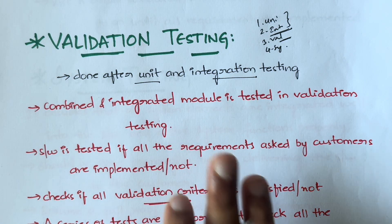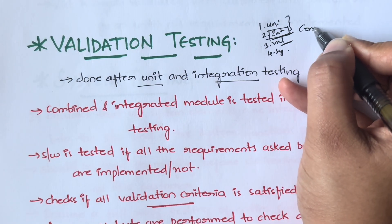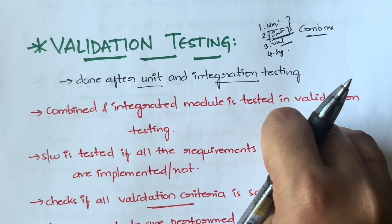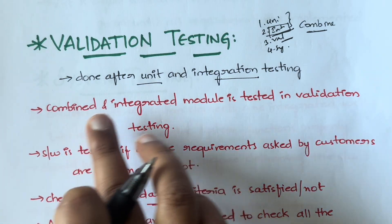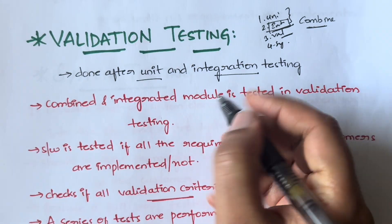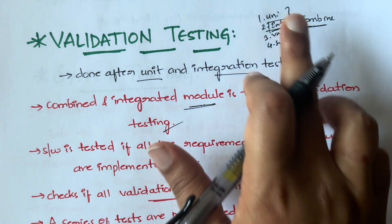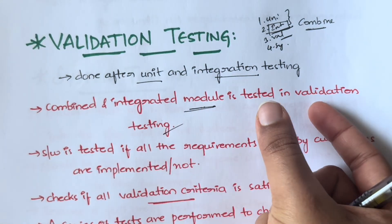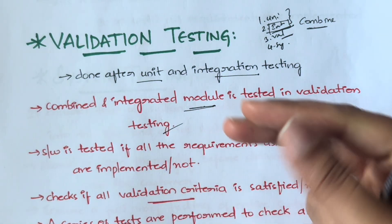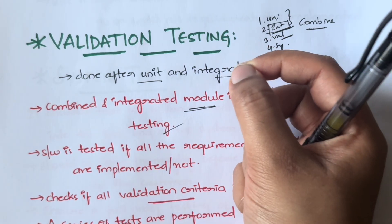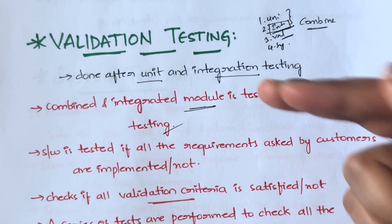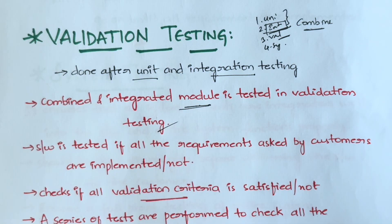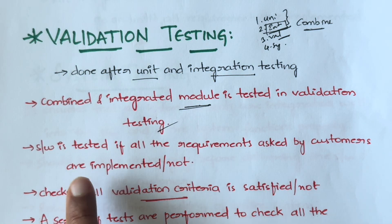In integration testing you combine all the modules — whether using a bottom-up or top-down approach — and test at each phase of combination. In unit testing you test every individual small piece. In integration you combine everything one by one and test at each phase. In validation testing, the entire combined unit is tested.